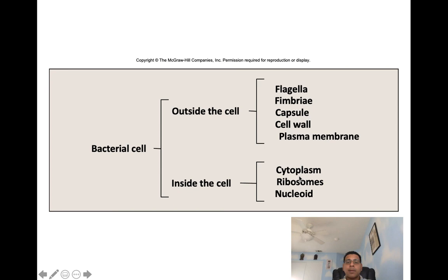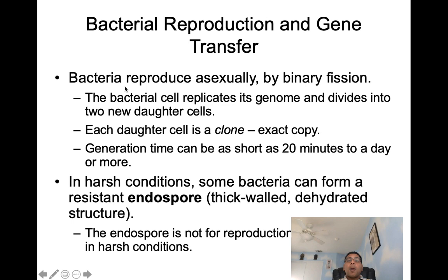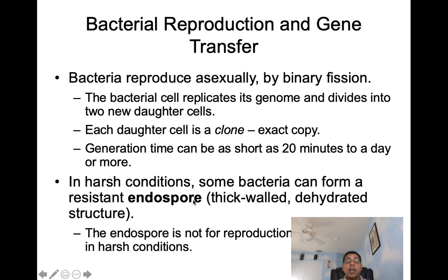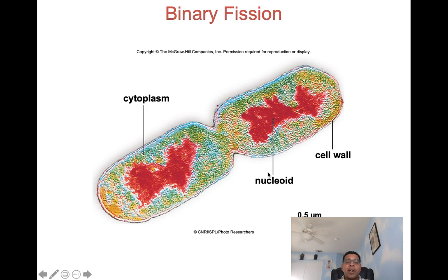Bacteria reproduce asexually by binary fission — the bacterial cell replicates its genome and then divides into two new daughter cells, each of which is a clone. Generation time can be as short as 20 minutes to a day or more. In harsh conditions, some bacteria can form a resistant endospore — a thick-walled dehydrated structure — not for reproduction but to survive harsh conditions.